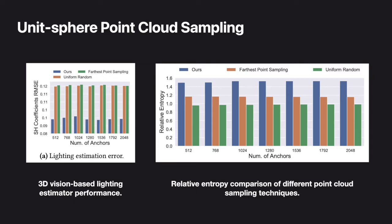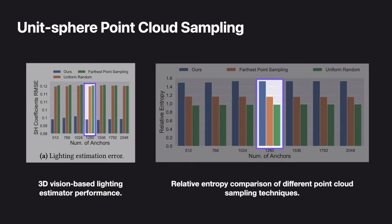Our evaluation shows that unisphere point cloud sampling outperforms other sampling methods, including uniform random sampling and farthest point sampling, in terms of both observation preserving and estimation accuracy. We trained our system co-design model XIHE-Net with three point cloud sampling methods under the same setup and measured the estimation error in the form of spherical harmonic coefficients RMSE. The other figure shows the observation coverage preserving performance, measured in the form of relative entropy, describing the distribution uniformity of a projected point cloud on a sphere surface.